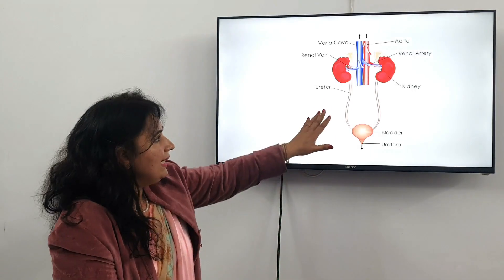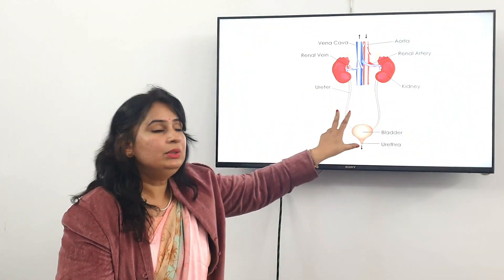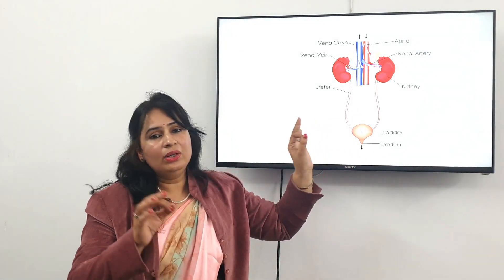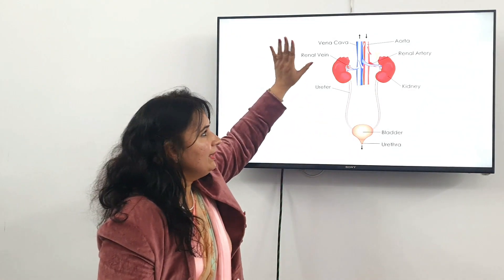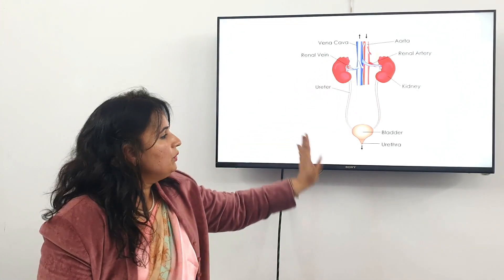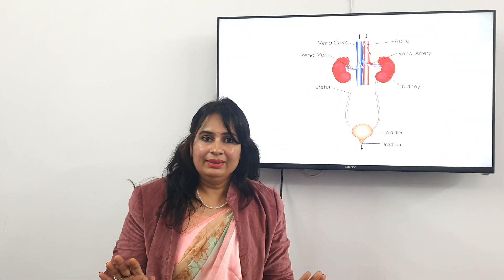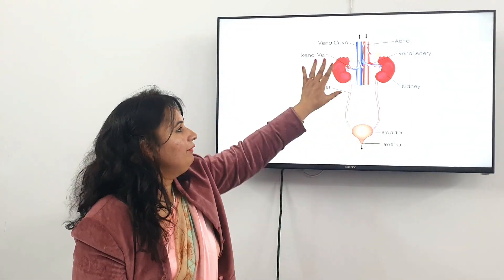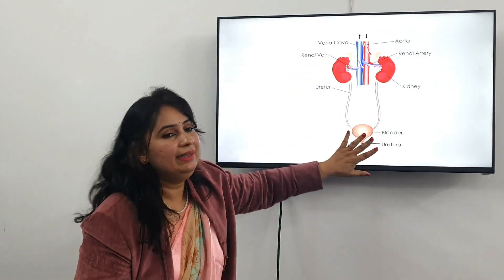Next we have the ureters — two tube-like structures you can see here. Their only function is to transfer the urine from the kidneys to the urinary bladder. They are responsible solely for the transportation of urine from the kidneys to the urinary bladder.